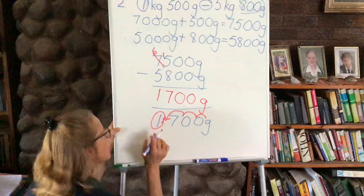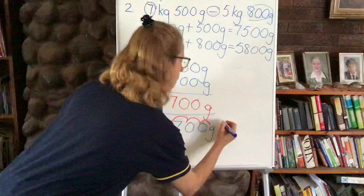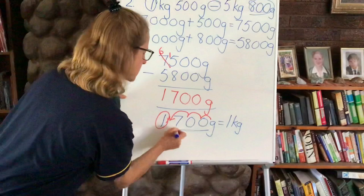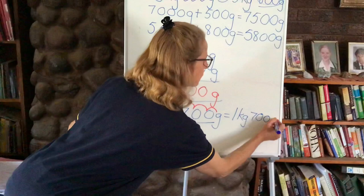We know again we've got one kilogram because 1000 grams gives us one kilogram. So we've got one kilogram and how many grams left? 700 grams. There we go. So our answer then is one kilogram and 700 grams.